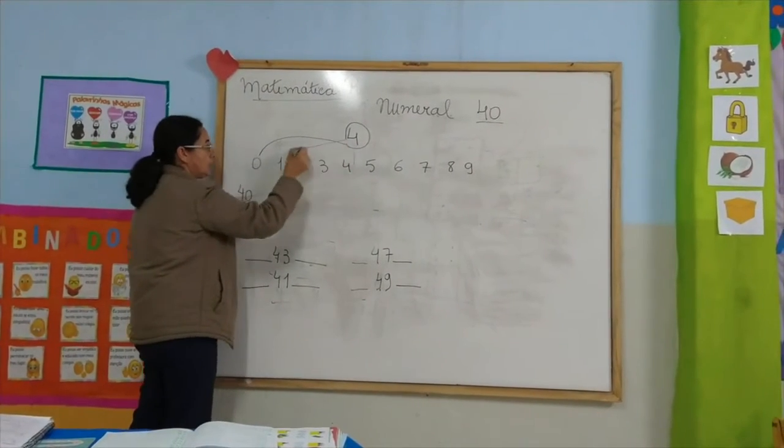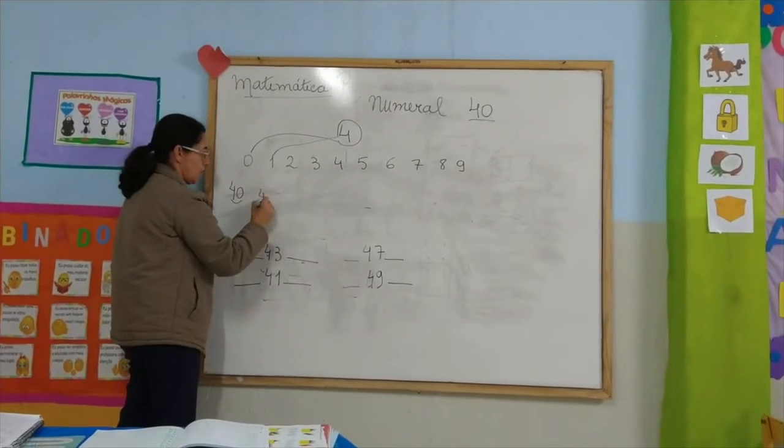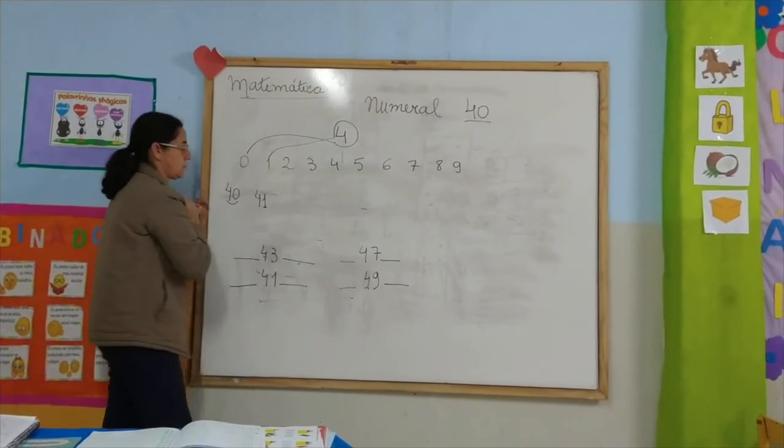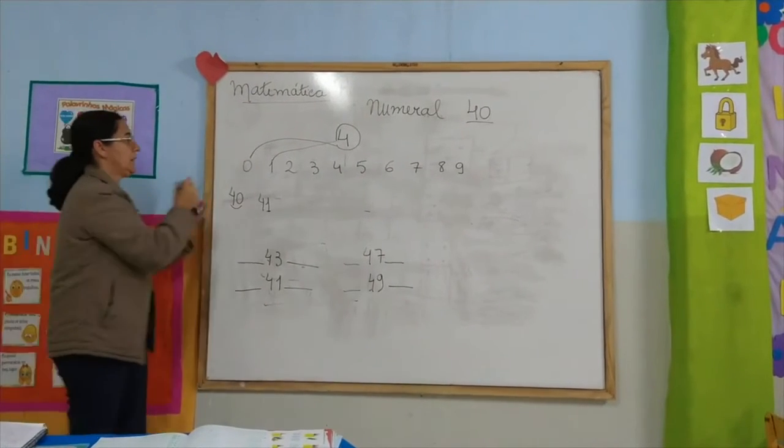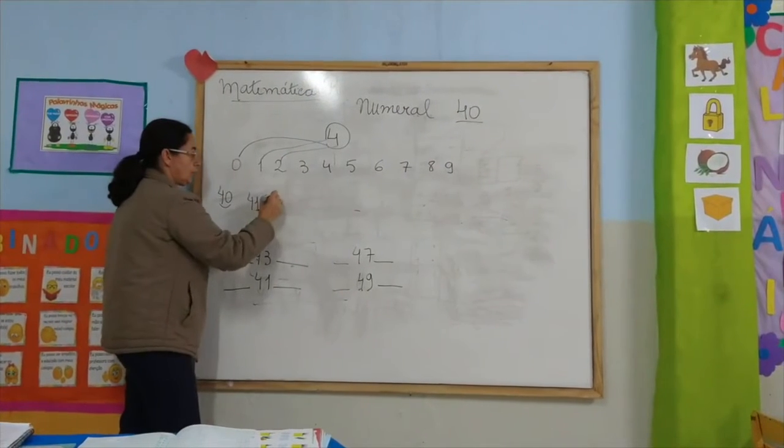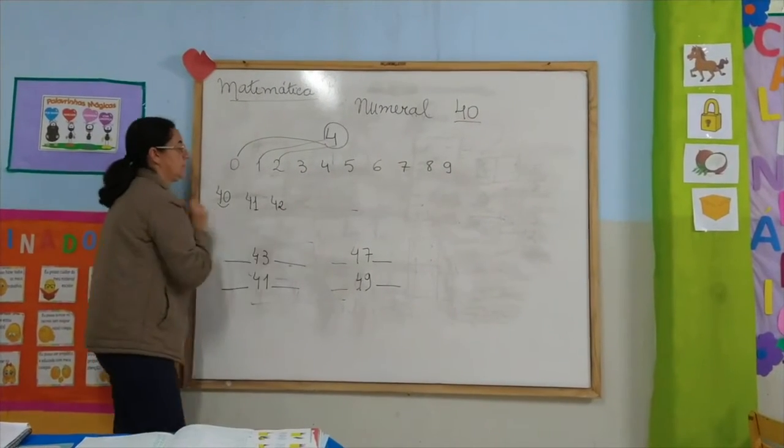Now, I will join the 4 with the number 1: 41. Now, I will join the 4 with the number 2: 42.